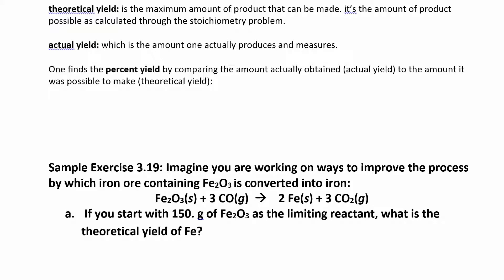Our very last section deals with something called percent yield. When you're calculating percent yield, you're really comparing the theoretical yield and the actual yield. The theoretical yield is what we've been doing before with these other calculations — trying to figure out how much product we're going to make. That's based on stoichiometry. In theory, if everything went perfectly, how much product would you make? That's the theoretical yield.